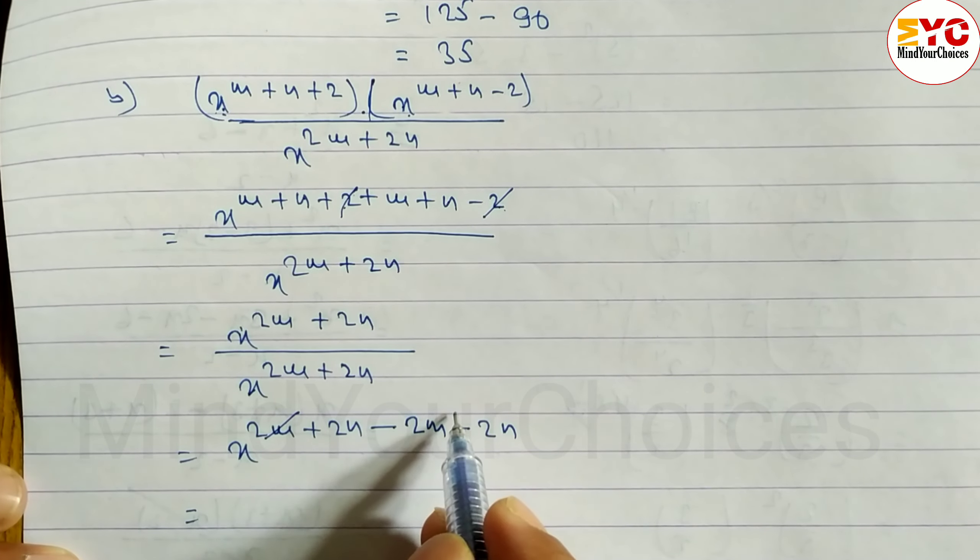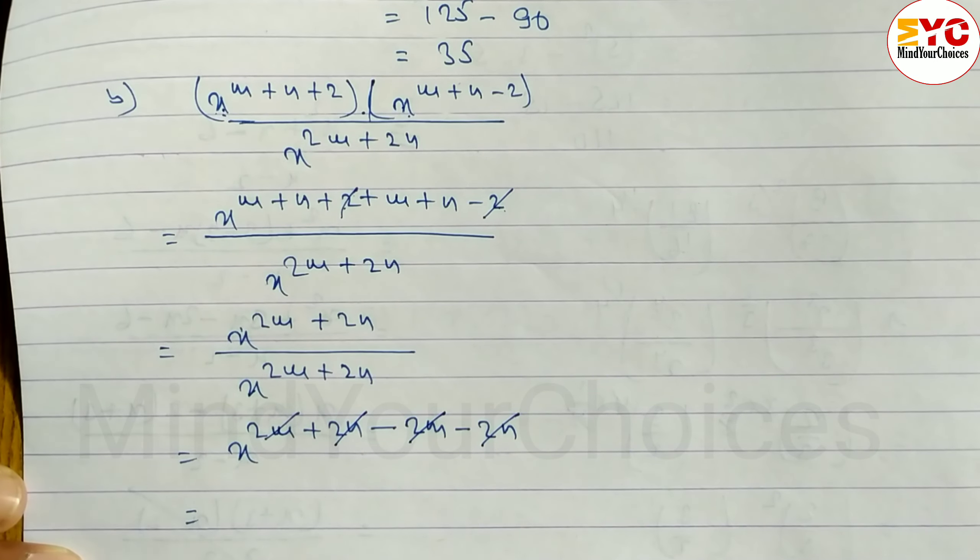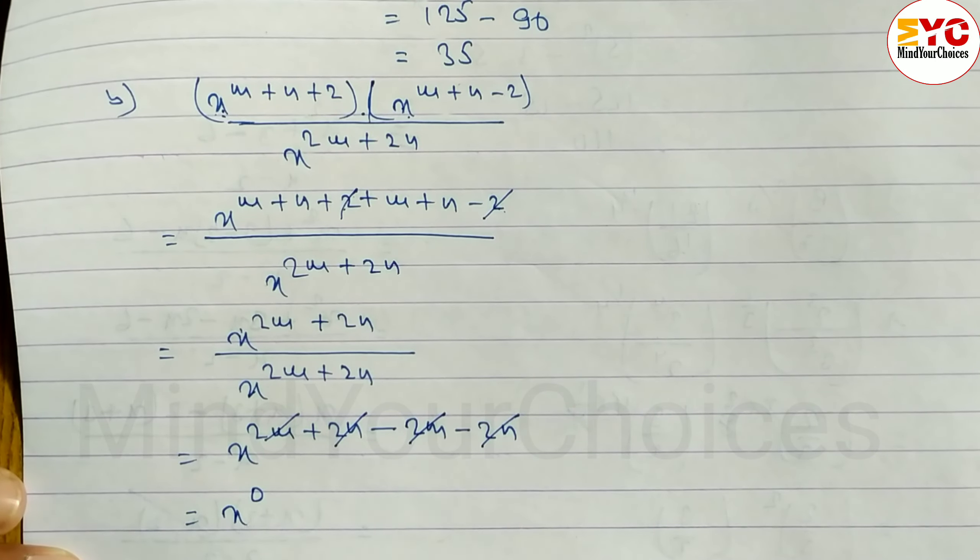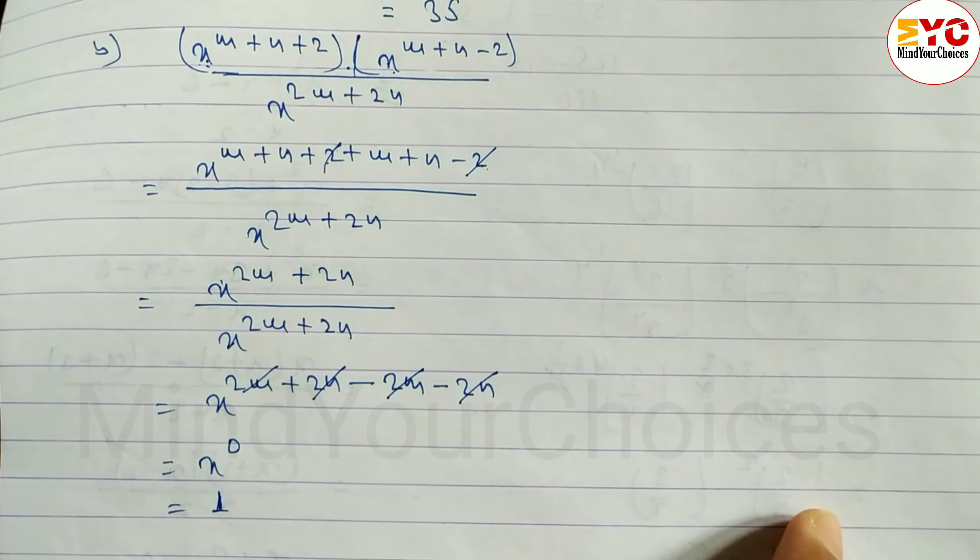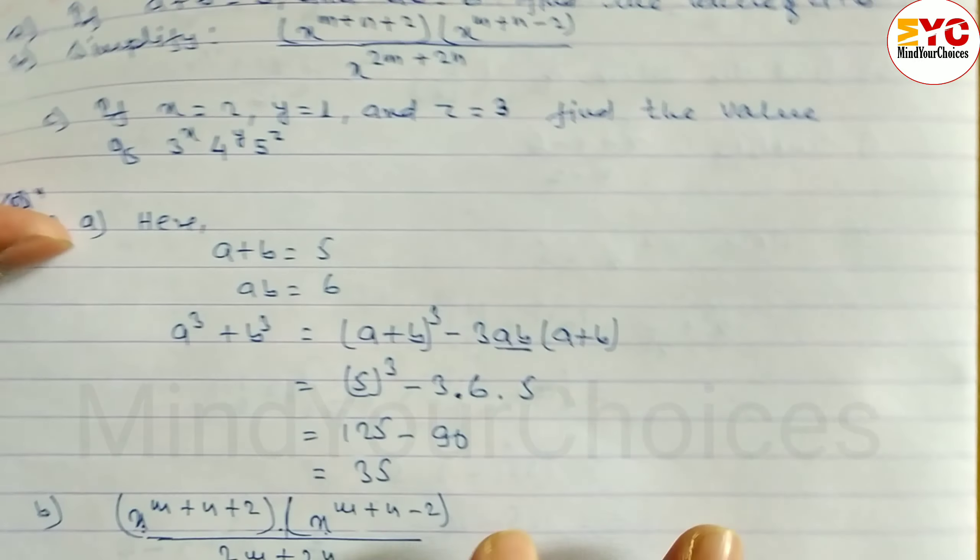Now we look at here: 2m and 2m cancel, 2n and 2n cancel when positive and negative. So x power nothing is there, so we write 0. X power 0 is 1. Hope you understand question number 10b.